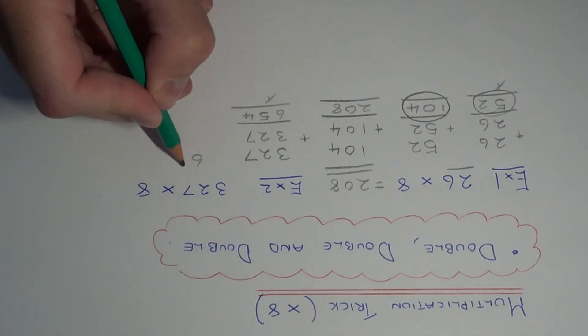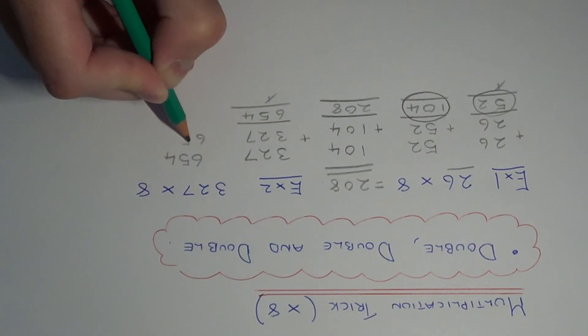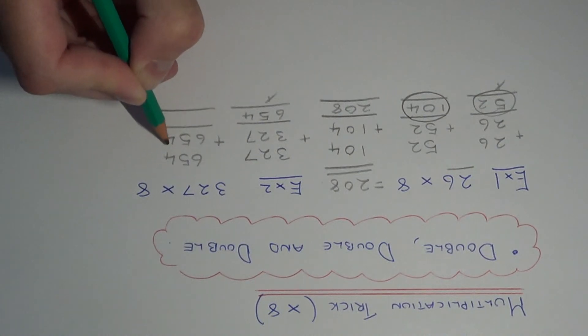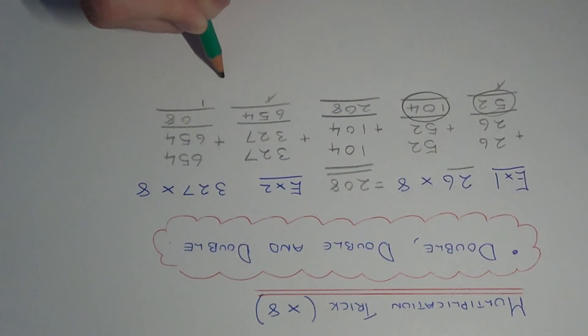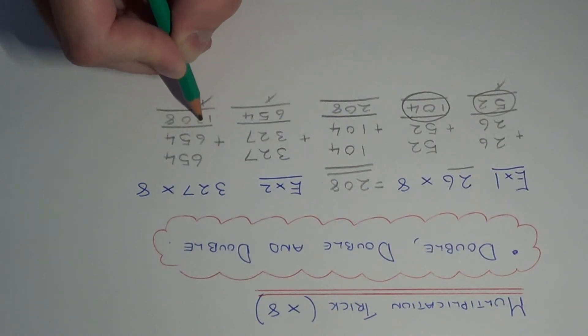We now need to double 654, so 4 add 4 is 8, 5 add 5 is 10, 6 add 6 is 12 plus the 1 is 13.